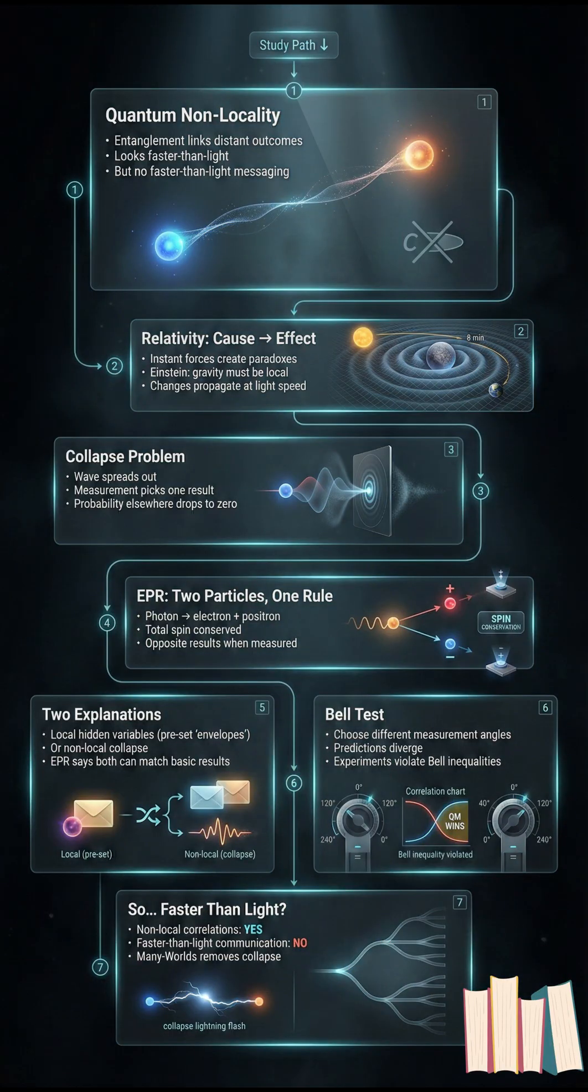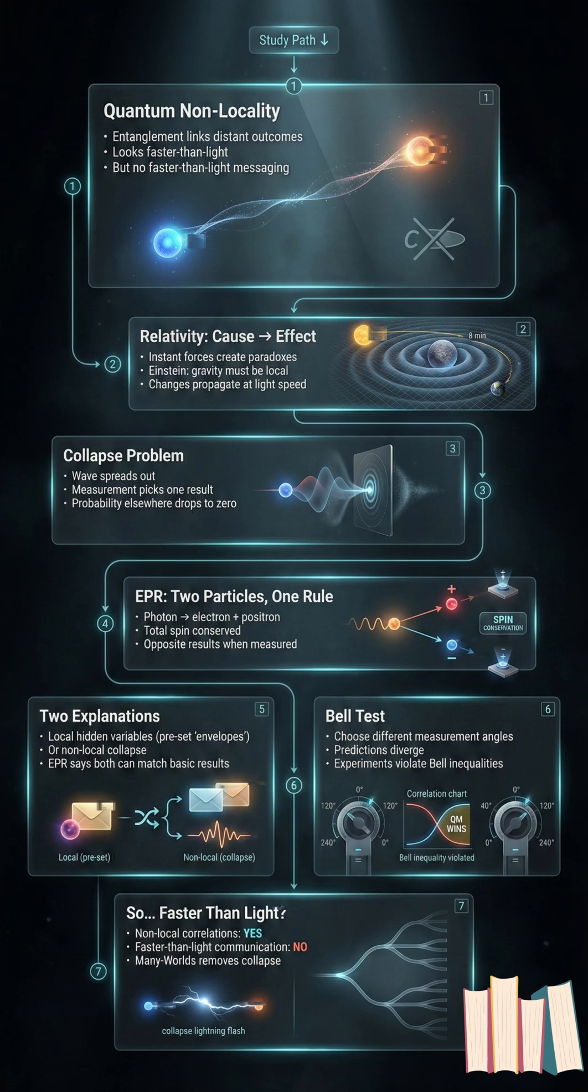and you get paradoxes. That's why Einstein rebuilt gravity as a new local theory. Changes ripple outward at light speed.